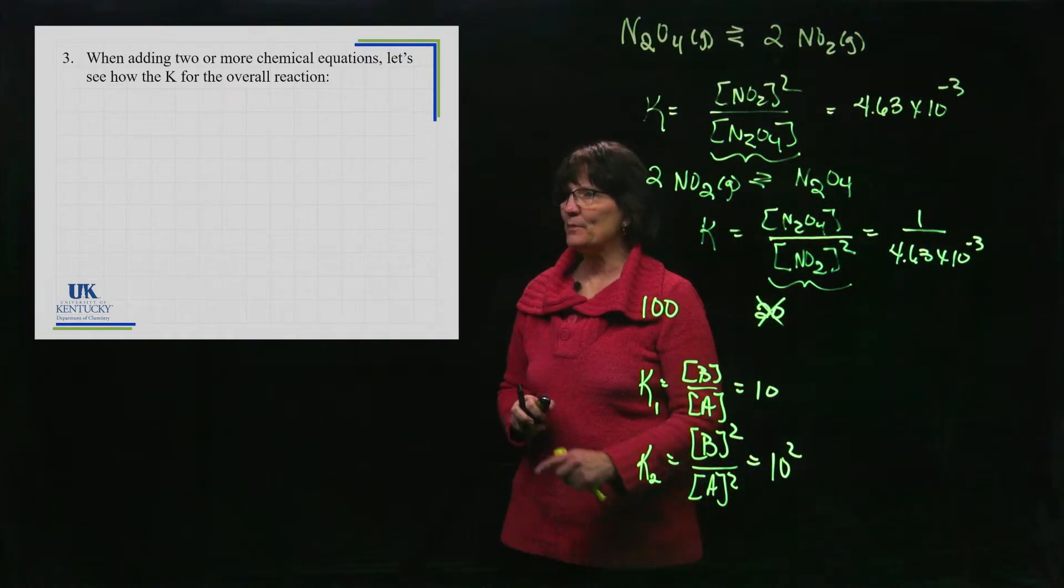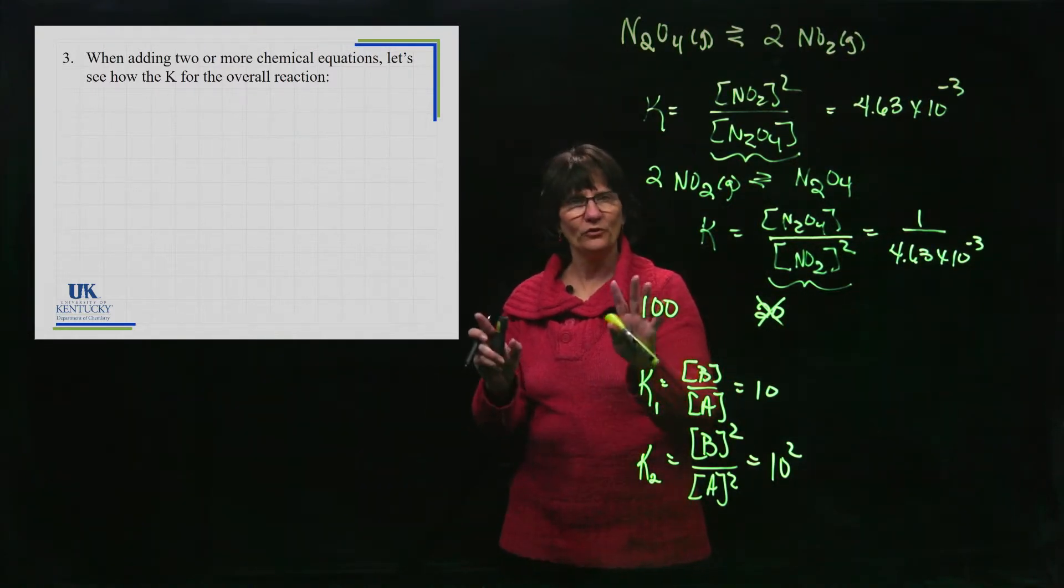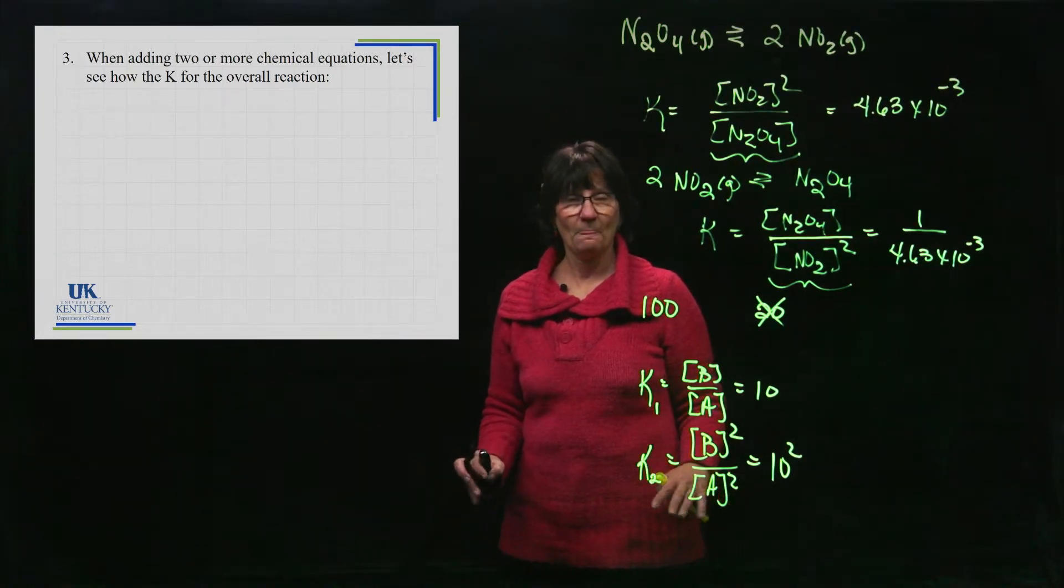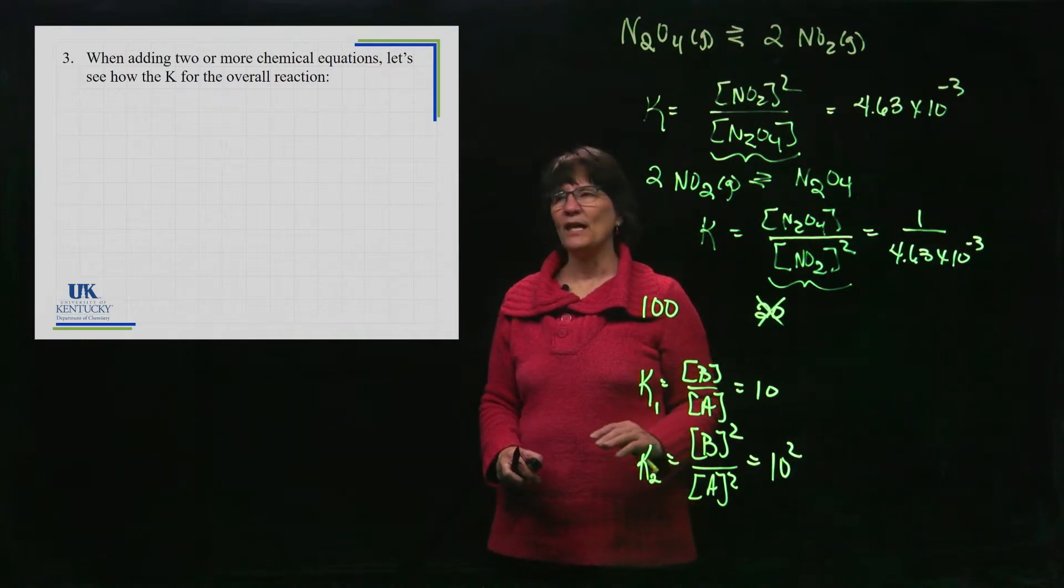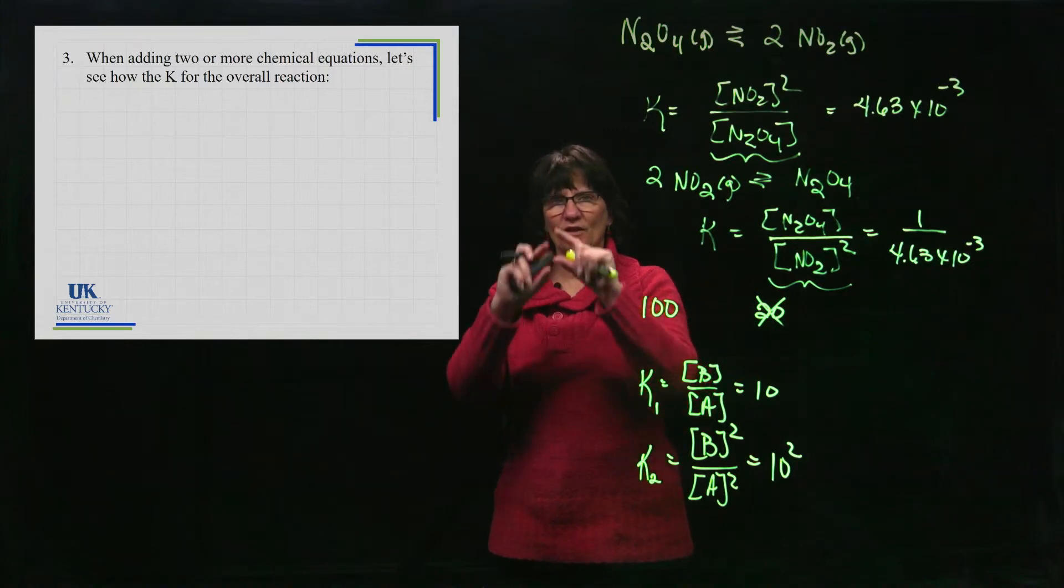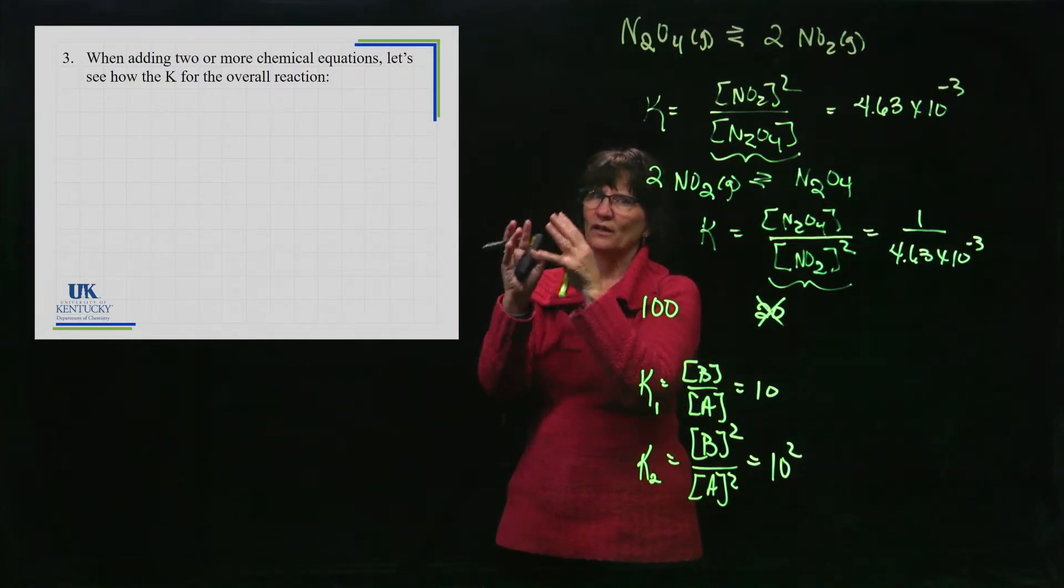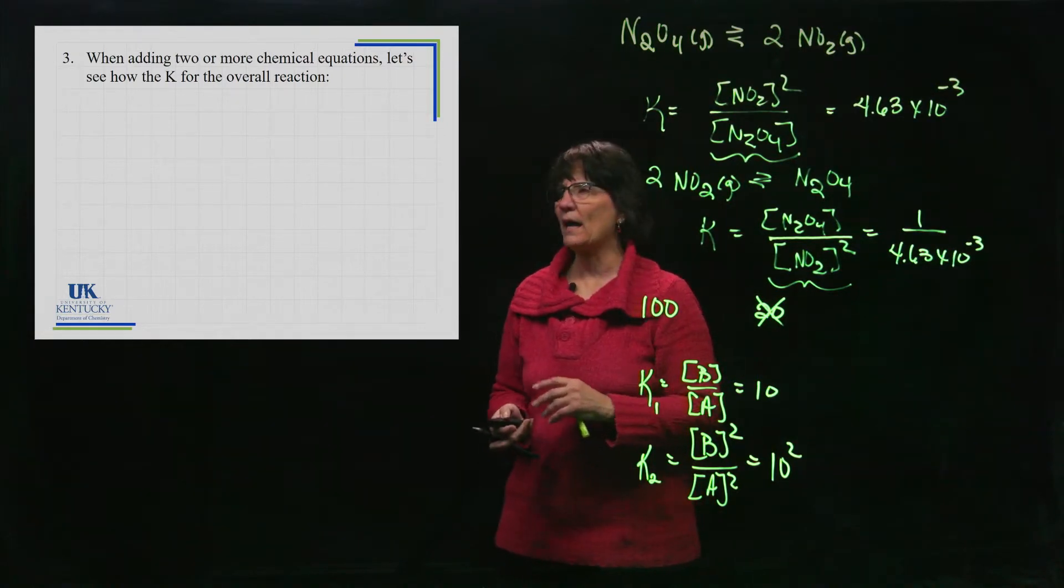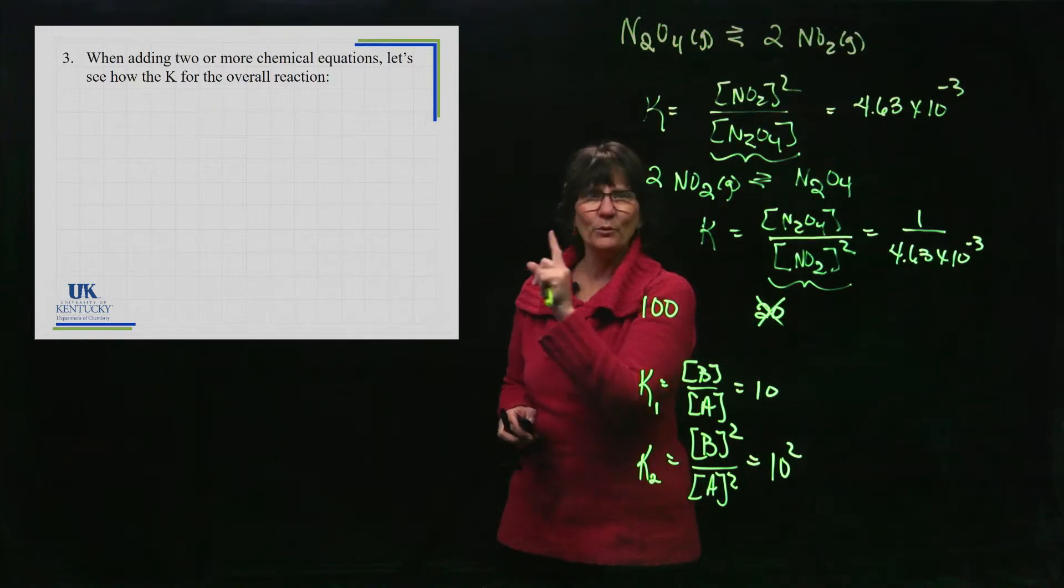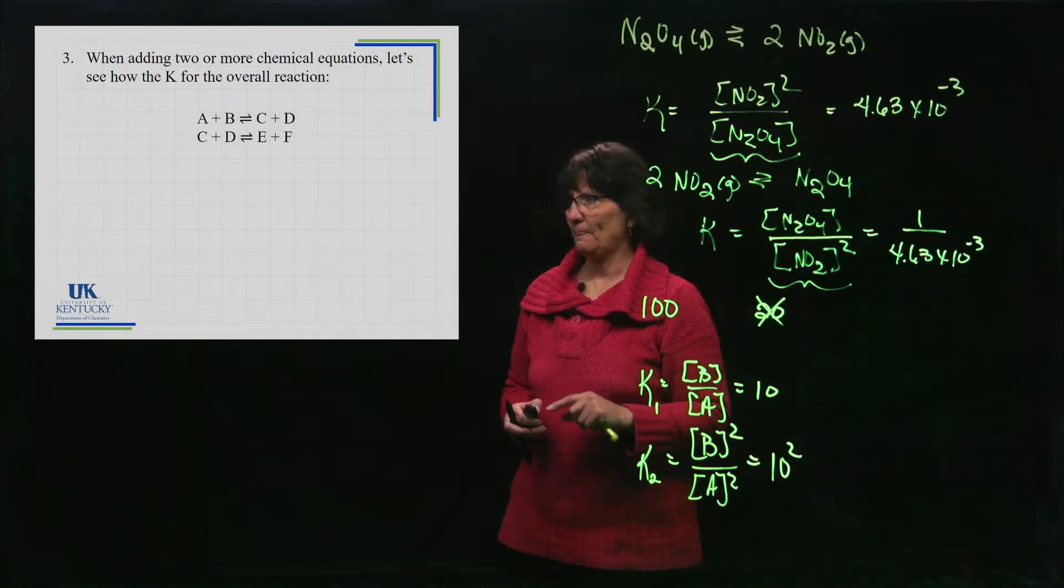Now the next manipulation we're going to do is add two, you could do more but we'll start with two, two chemical equations together to get a third equation. And we need to think about those manipulations. In Hess's law, we did a thing with delta H. This reaction plus this reaction gives you this reaction. We took those delta H values and got a value for that. We've got to be able to deal with a similar situation with K's, but the mathematics is very different.